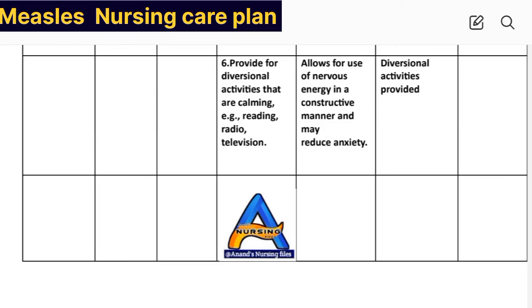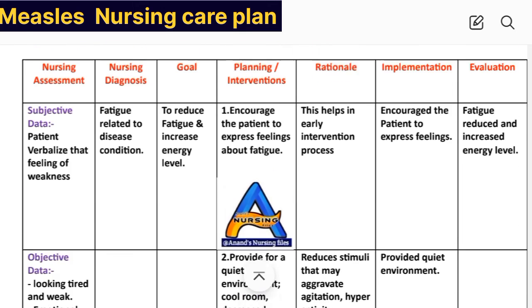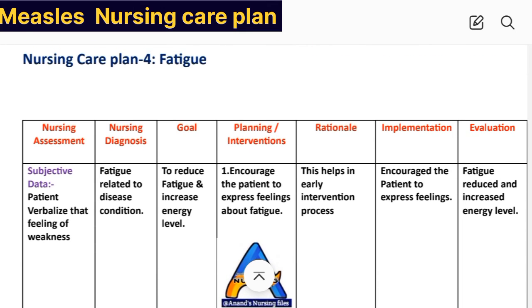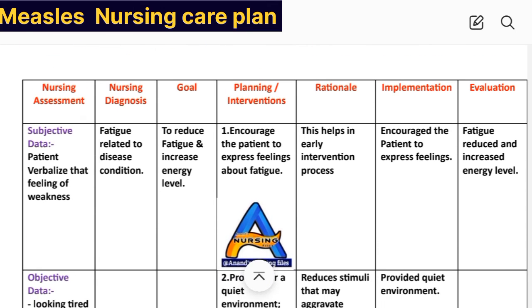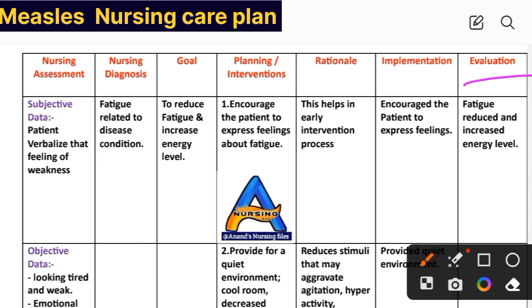Intervention number five: advise a regular sleep schedule. Rationale: helps the body to restore energy more effectively. Implementation: advice for regular sleep schedule given. Intervention number six: provide diversional activities that are calming, for example reading, radio, or television. Rationale: allows use of nervous energy in a constructive manner and may reduce anxiety. Implementation: activities provided. Evaluation: fatigue reduced and energy level increased. Care plan number four complete.